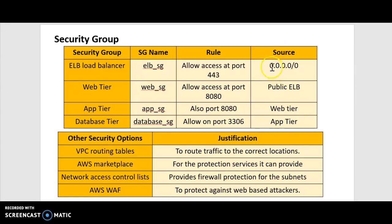The traffic flow will be as follows: the source for the load balancer is going to come from the wider internet, and that's then going to feed to the web tier, which is then going to feed to the app tier, which is then going to feed to the database tier.